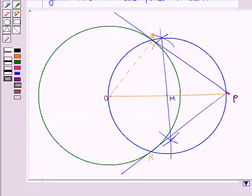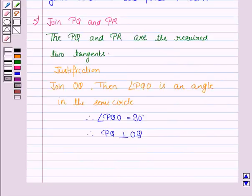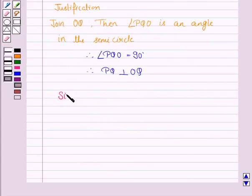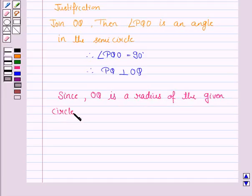And since OQ is the radius of the given circle, PQ has to be a tangent to the circle. So, this is 90 degrees. PQ has to be a tangent to the circle.